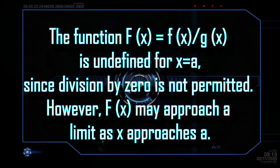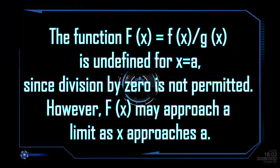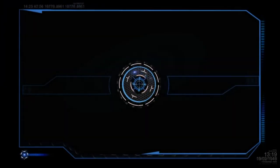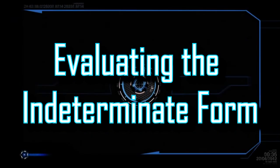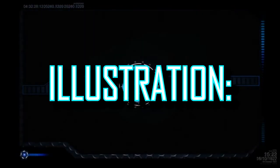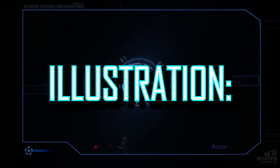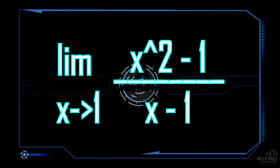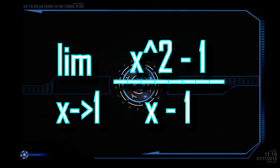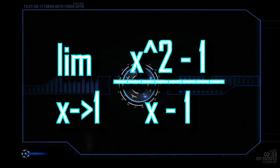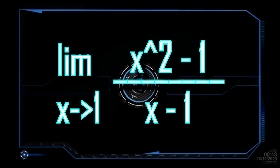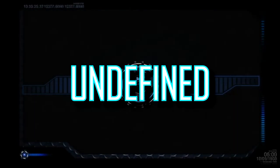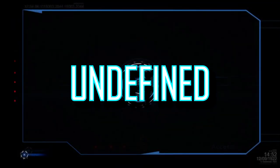However, f(x) may approach a limit as x approaches a. The process of determining this limit, if it exists, is called evaluating the indeterminate form. Take a look at this: when x equals 1, the fraction x squared minus 1 over x minus 1 has the form 0 over 0, and hence is undefined.